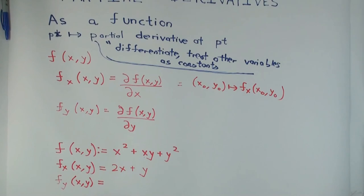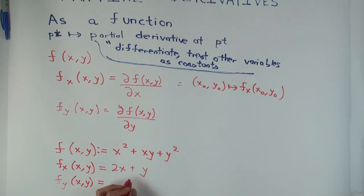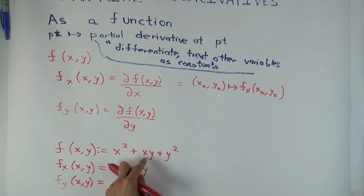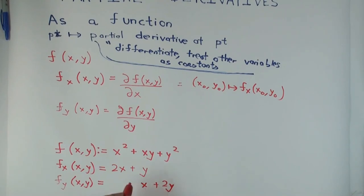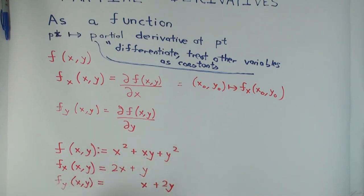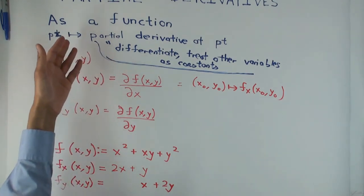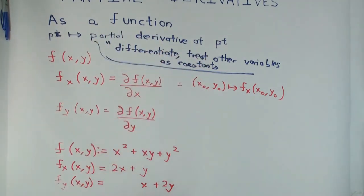Now for f sub y of (x, y): x² differentiates to zero. For xy, using the product rule, the derivative of x is zero so you get x times the derivative of y, which is x. The derivative of y² is 2y. So f sub y = x + 2y. In general, for more than two variables, the idea is the same: differentiate with respect to that one variable and treat all other variables as constants.